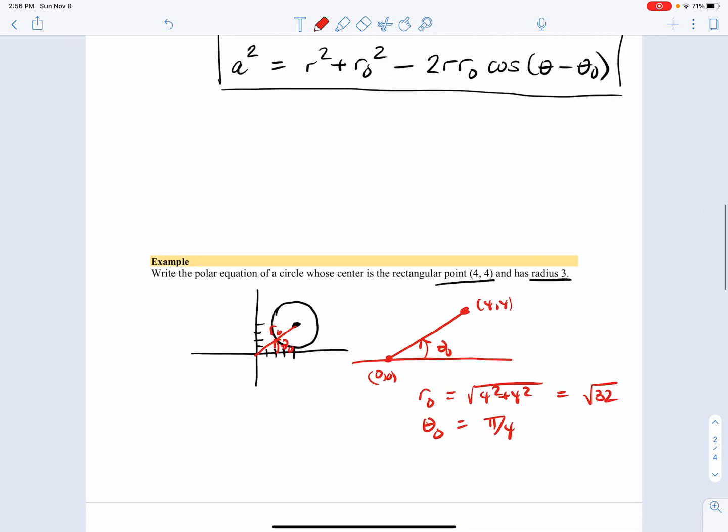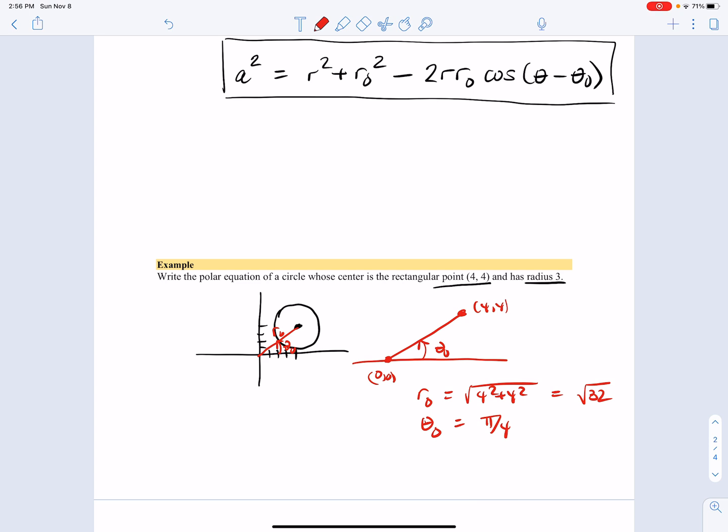So that means according to the equation we derived, and radius is three, so that means a is three. So that means we have 9 equals r squared plus r zero squared is 32 minus two r root 32 cosine of theta minus pi over four.